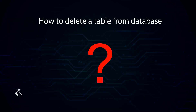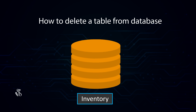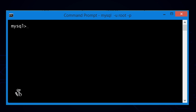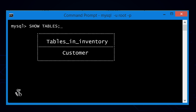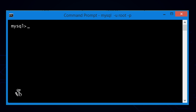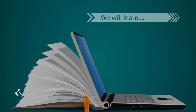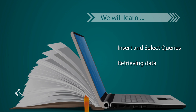DROP TABLE: Now let us see how to delete a table from the database. We have already selected the inventory database. Let us first see what tables are present using the SHOW TABLES command: SHOW TABLES; Now let us drop the table using: DROP TABLE table_name; That's all for this lesson. In the next lesson, we will learn INSERT and SELECT queries, and also learn about the WHERE clause, which plays a key role in retrieving data.